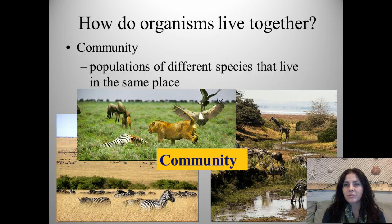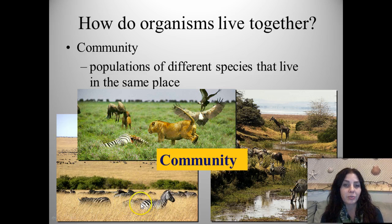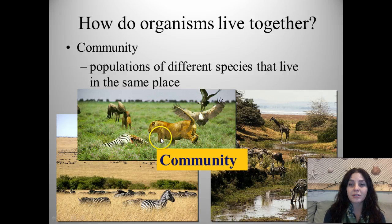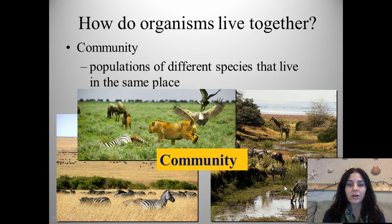How do organisms live together? They form communities. Communities are when populations of different species of organisms are living together at the same time in the same place. Here we have populations of zebras, lions, buzzards, giraffes, grasses, and things you might not be able to see, such as bacteria and fungus. All of those together form a community.